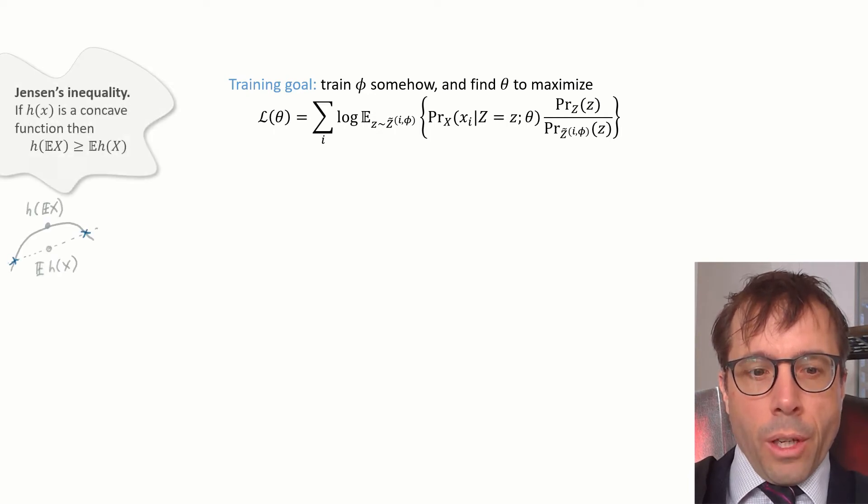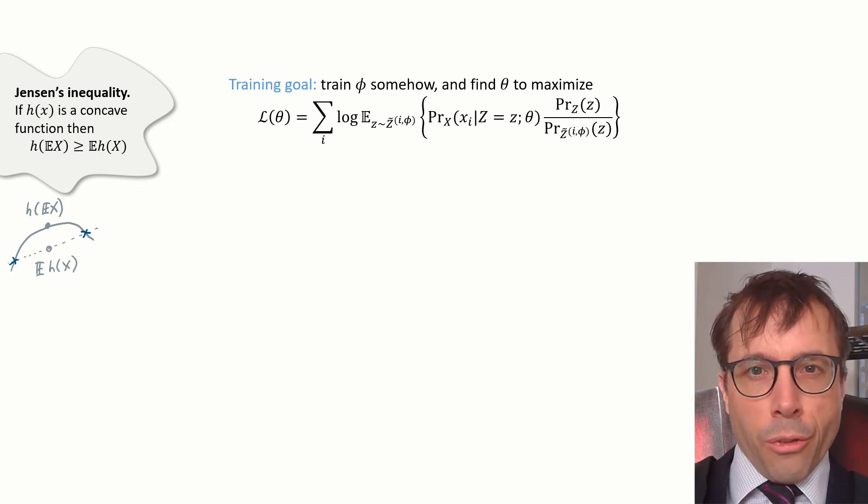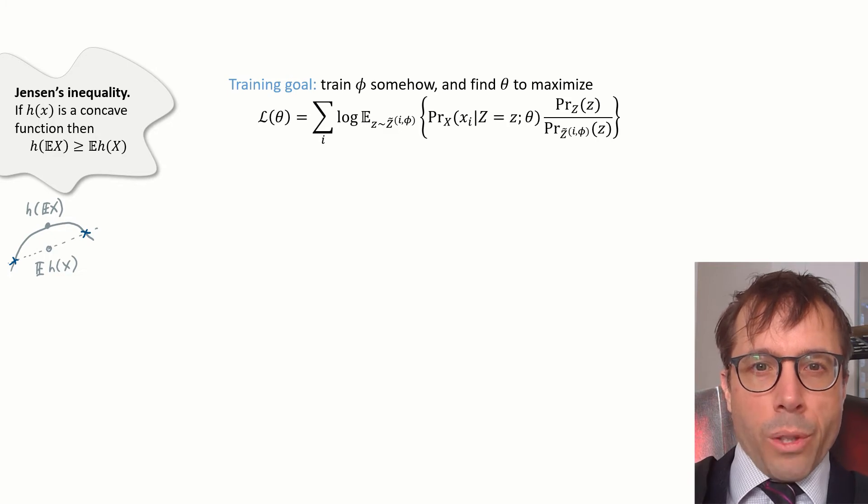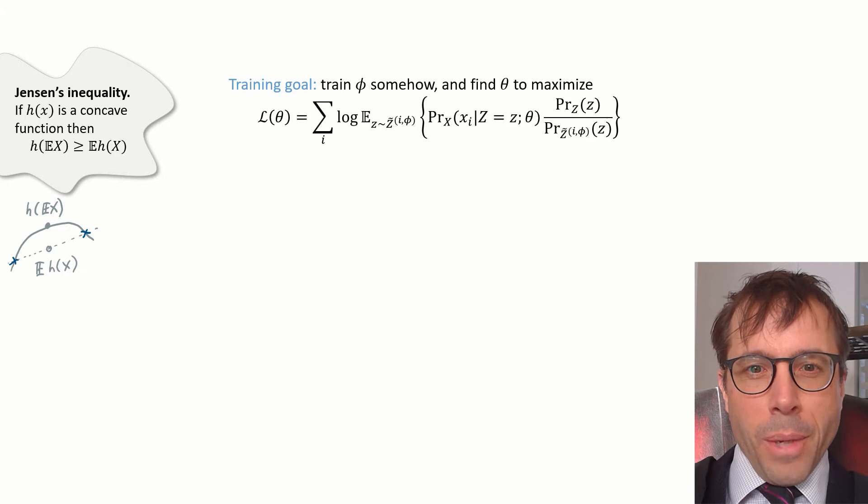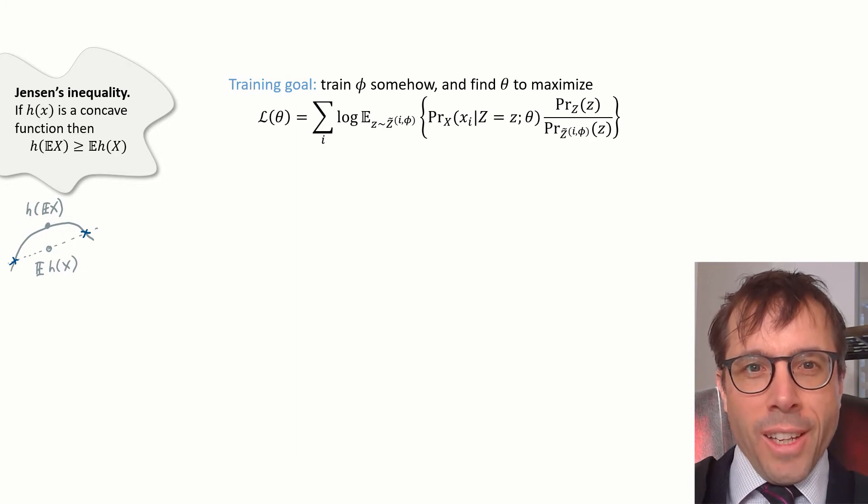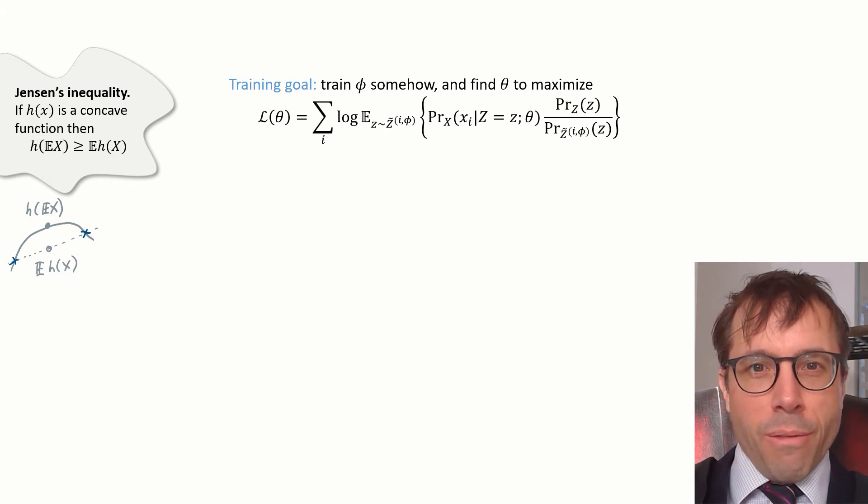To make progress here, we need to use one of the classic probability bounds, Jensen's inequality. This says that if h is a concave function and x is a random variable, then h of the expected value of x is above or equal to the expected value of h of x. I can never remember which way around this goes, so I always have to draw myself a picture. Concave means the function looks like a cave with a cave opening, and h of expected value of x is a point on the roof of the cave, so it's above or equal to the expected value of h of x.